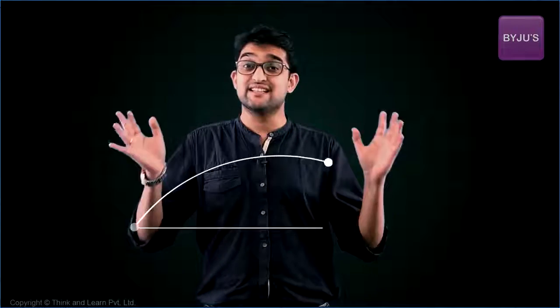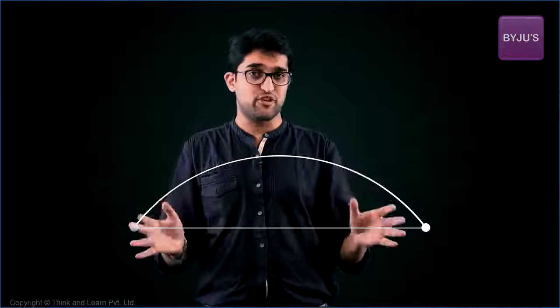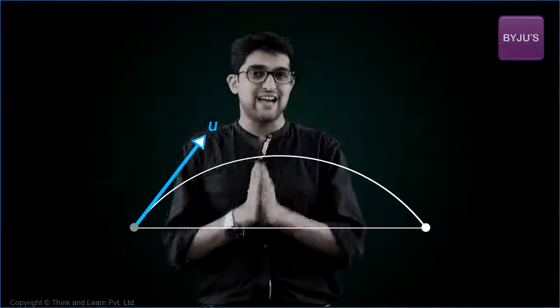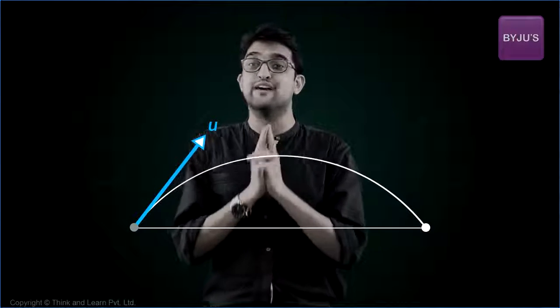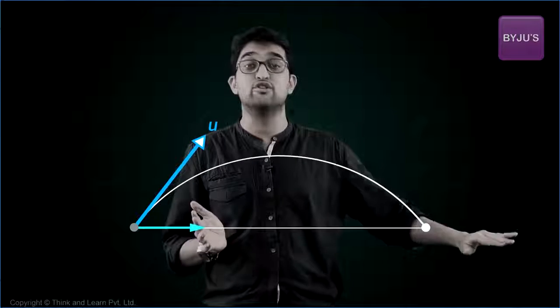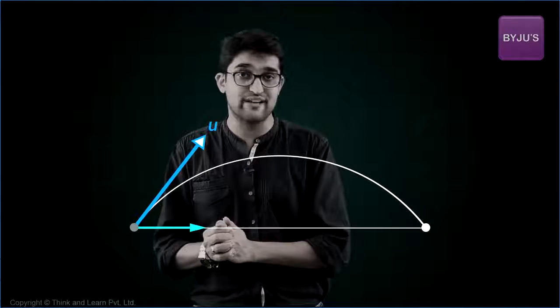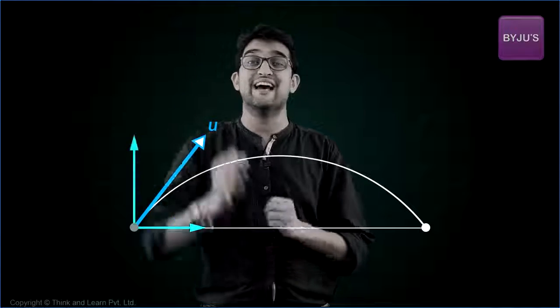For instance, let's take this standard projectile. This projectile with a 2D motion is actually a combination of two 1D motions. One-dimensional motion along the horizontal direction and another one-dimensional motion along the vertical direction.